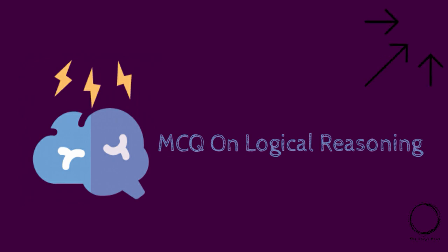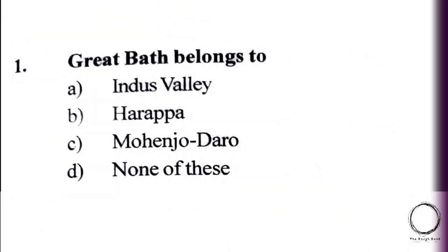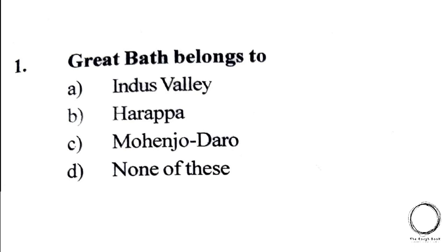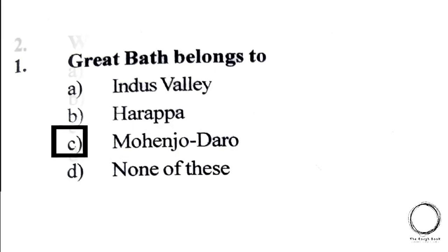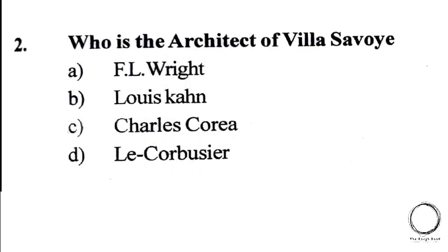Let's start with the first question: The Great Bath belongs to — A) Indus Valley, B) Harappa, C) Mohenjo-daro, D) None of these. The answer is C) Mohenjo-daro.